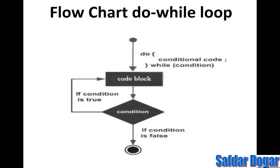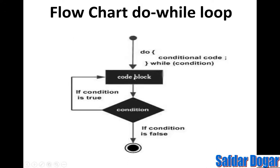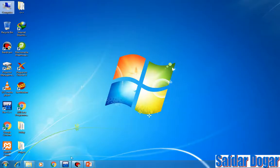Regarding the flowchart: you first execute the code block, then test the condition. If the condition is true, the code block will be executed again and this continues until the condition is false. Once the condition is false, you exit the loop.